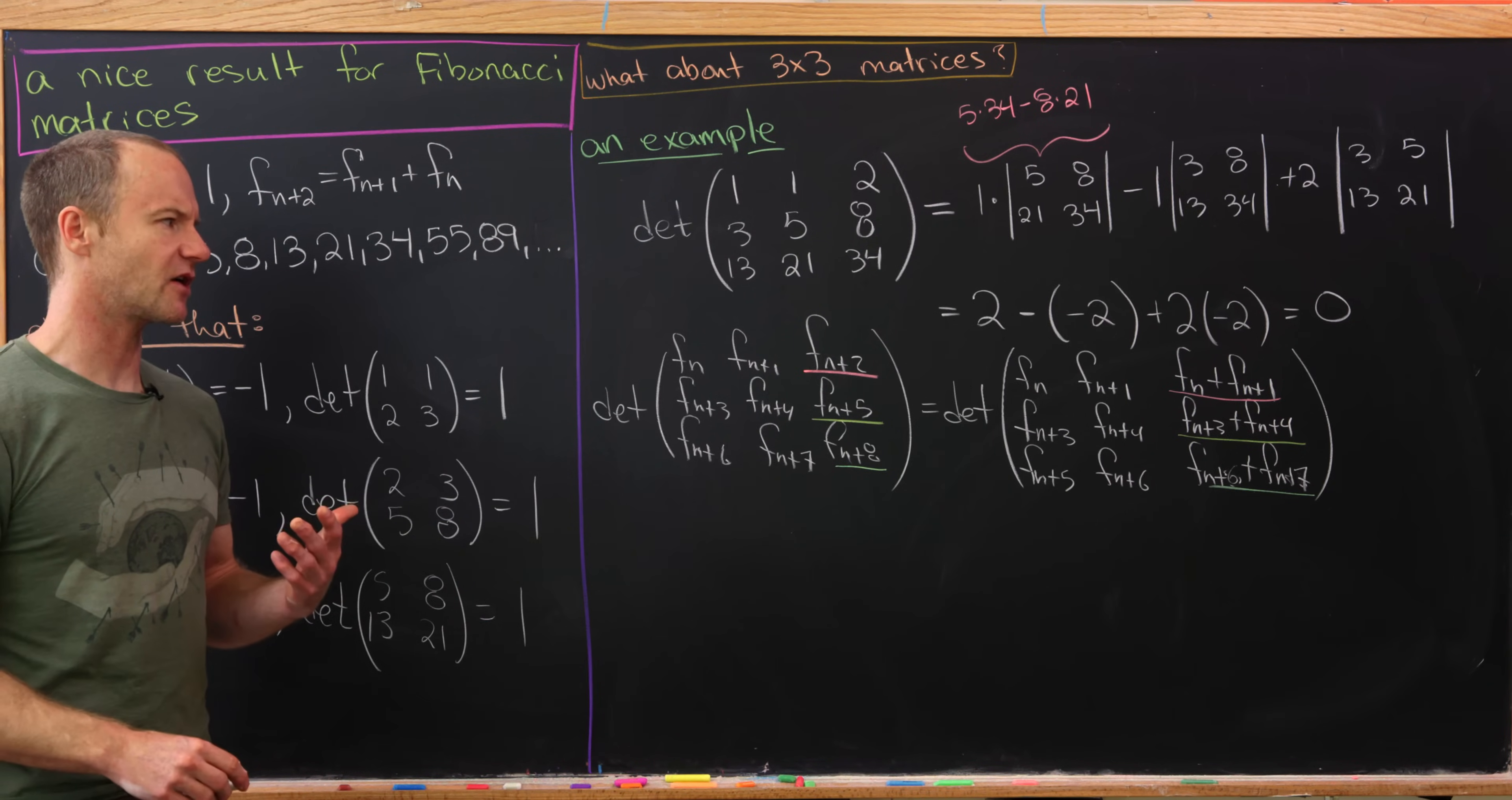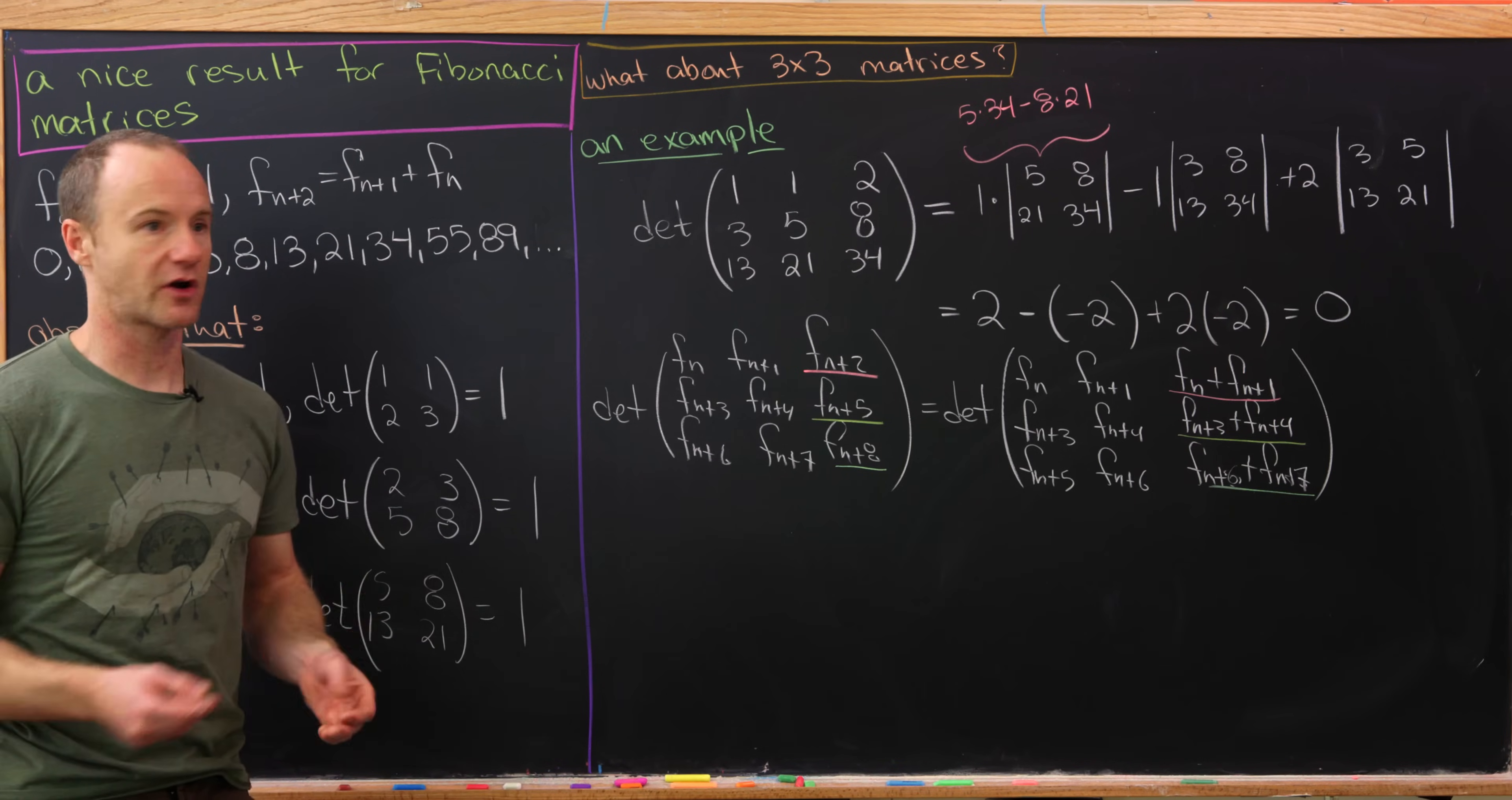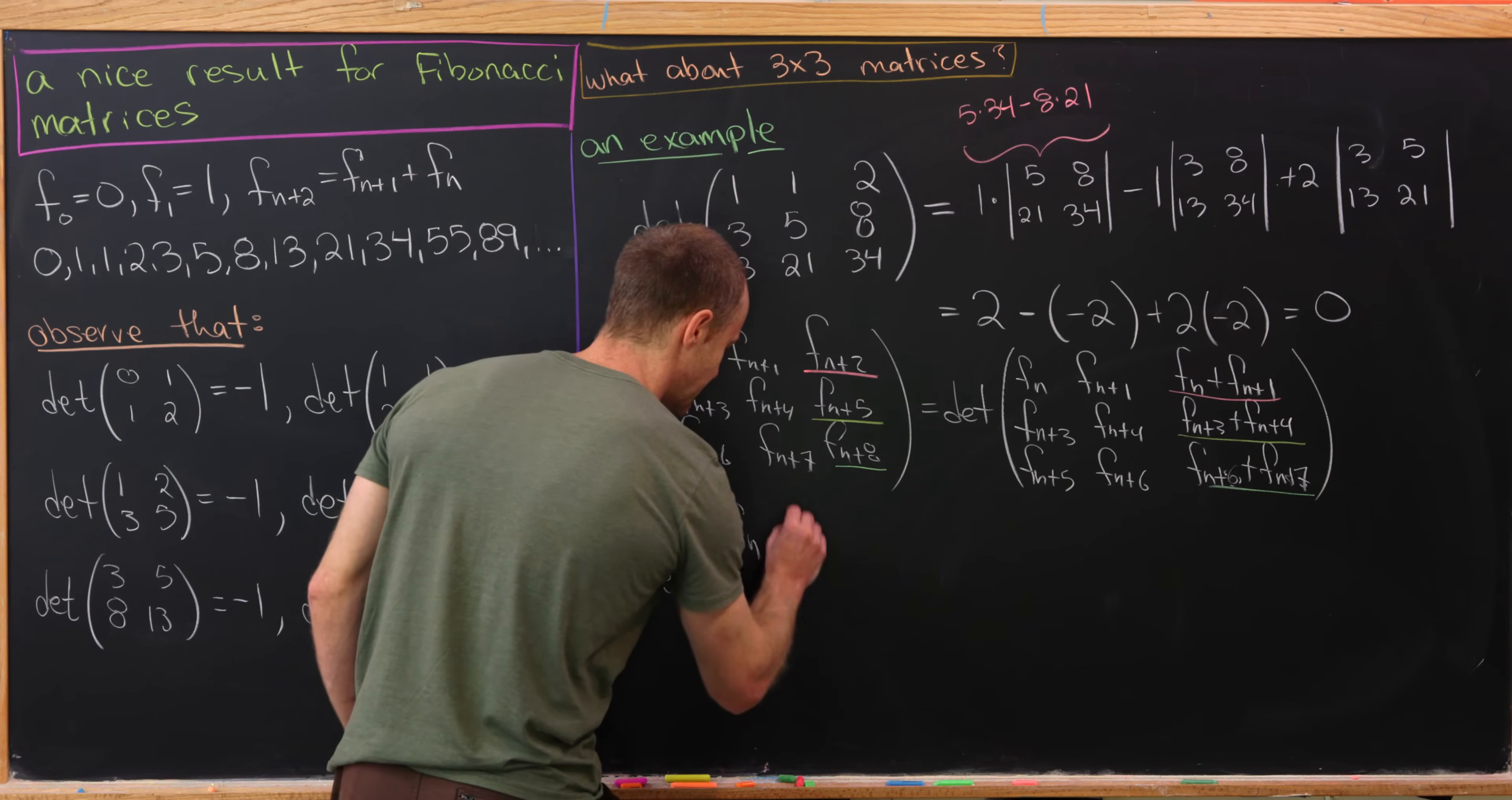But now there's a fact from linear algebra that says if you have a matrix where the columns are linearly dependent, then the determinant of the matrix is 0. But a special case of that would be the matrix where you have one column is a linear combination of the other columns. And that's exactly what we have here. Our last column is the sum of our previous columns. And that should tell us that the determinant of this matrix is 0.